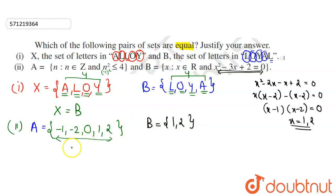So here you can see that 0 is belonging to A, but 0 does not belong to B. So that means set A is not equal to set B. So this completes our solution.